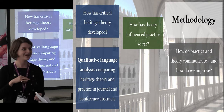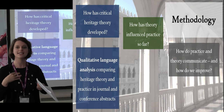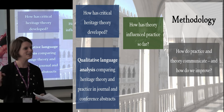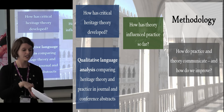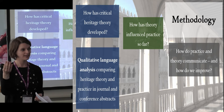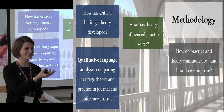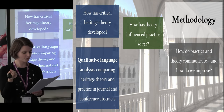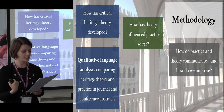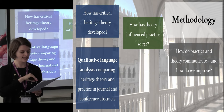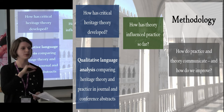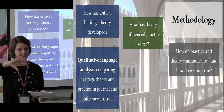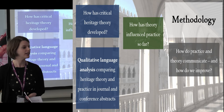For example, terms like authenticity, intangibility, or the authorised heritage discourse — how often do we use these in heritage journals, and then how often do we use them in archaeology journals, museum journals, conservation journals? I'd really like to see whether there are trends showing ideas getting discussed frequently in one discipline and then coming through and being discussed in another.